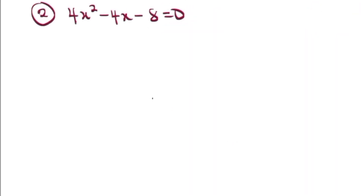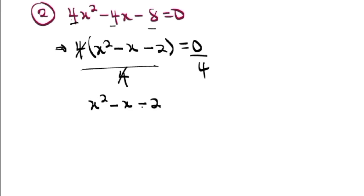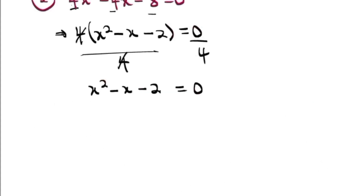Problem 2: 4x² - 4x - 8 = 0. Factor out 4 to get 4(x² - x - 2) = 0. Divide both sides by 4 and you are back to x² - x - 2 = 0, which is exactly what we solved before.